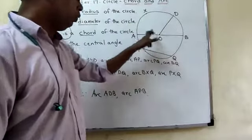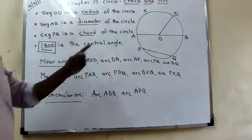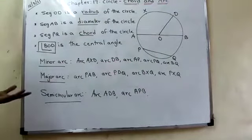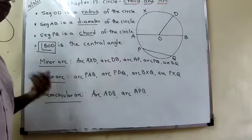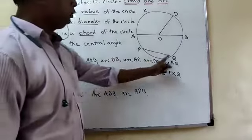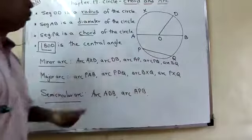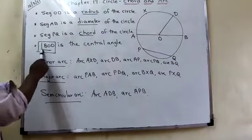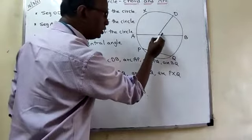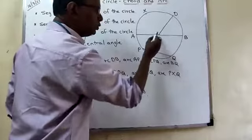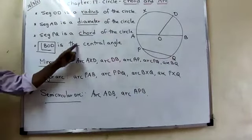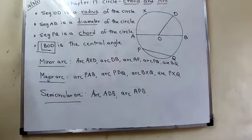Once again: O is the center; OD, OB, OA are radii; AB passes through the center so AB is the diameter — also called the largest chord. The formula for diameter is 2 into radius, that is 2r. PQ doesn't pass through the center, so PQ is a chord. Angle BOD passes through the center, so it is called a central angle.